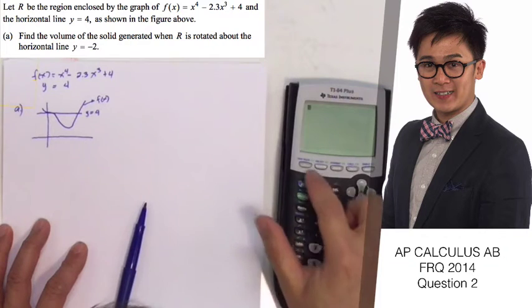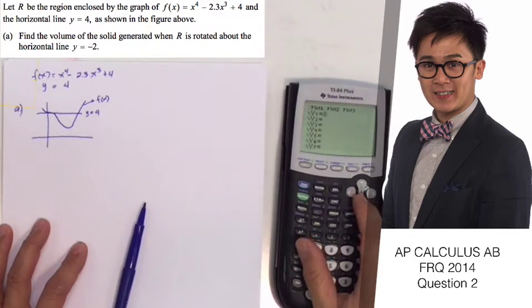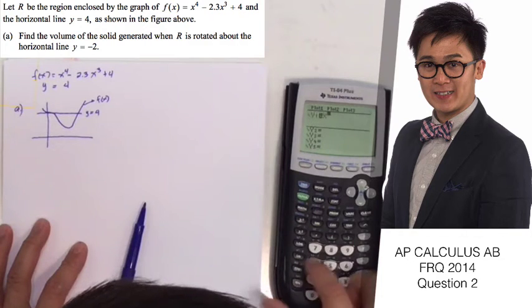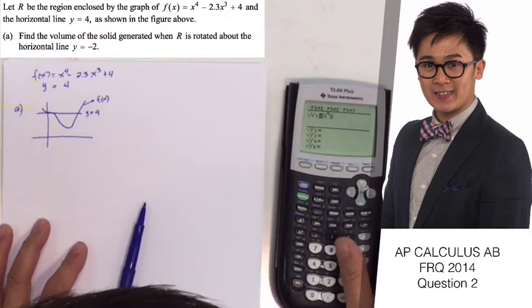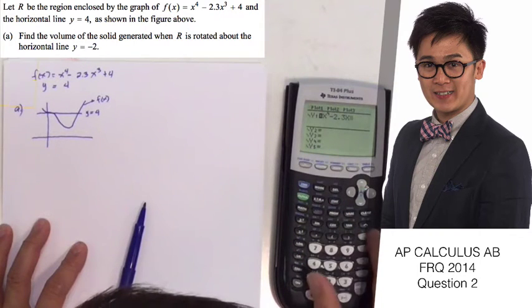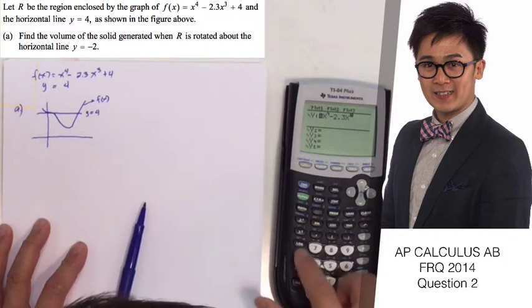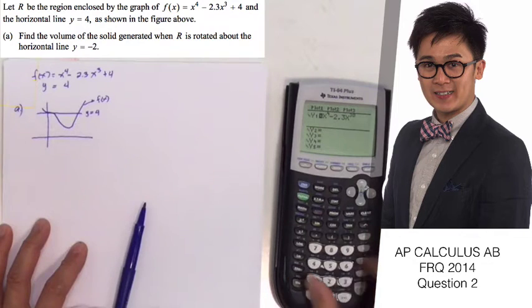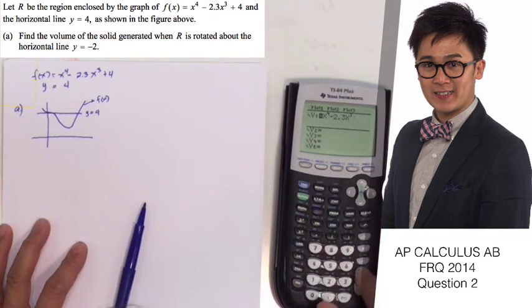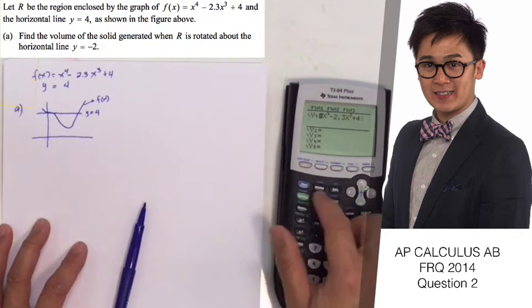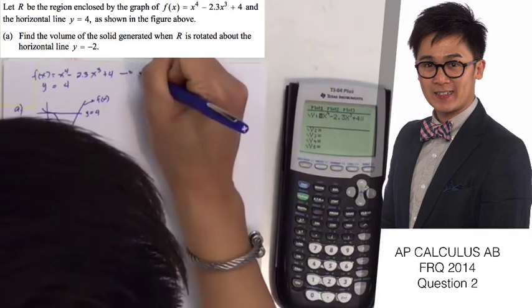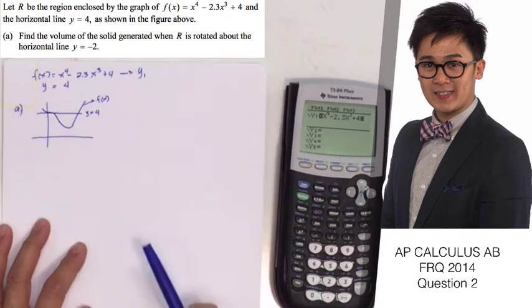In our calculator, let's plug in the value of f(x), which is x⁴ - 2.3x³ + 4. Now that we have our y₁ for f(x), let's label f(x) as our y₁.